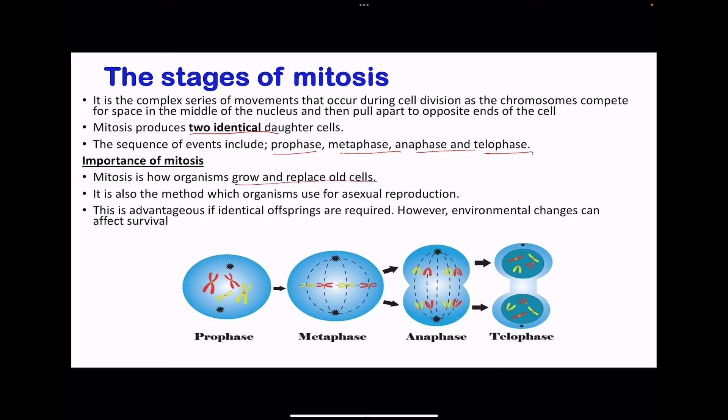Mitosis is also a method of asexual reproduction, where organisms that cannot reproduce sexually produce offspring. The offspring are genetically identical because this occurs through mitotic cell division. Asexual reproduction using mitosis can be advantageous if the aim is to produce genetically identical offspring, perhaps if those organisms produce a specific beneficial molecule. However, the downfall is that environmental changes can affect the survival of the organisms.